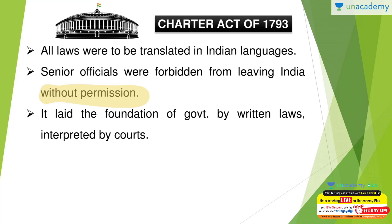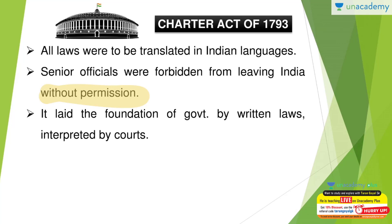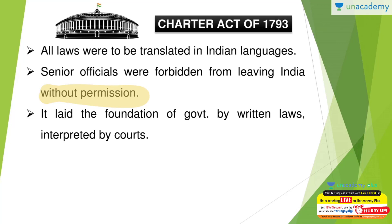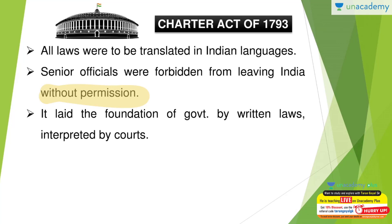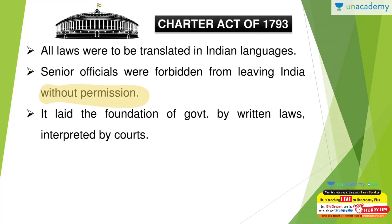Royal approval was now required — you could not just appoint anyone as Governor General, Governor, or Commander-in-Chief. A proper system had been put in place. As we saw in Pitt's India Act, a joint government had come into place where the British government held ultimate authority and the company became a subordinate department of the state. Because of this, British territories in India were now called 'British possessions in India' — add this point if you haven't already.